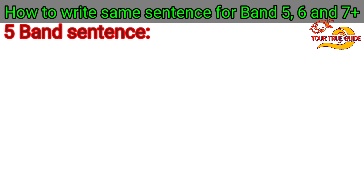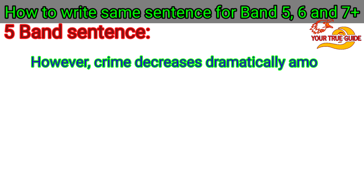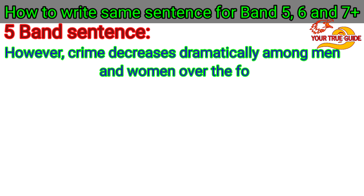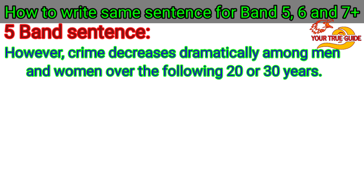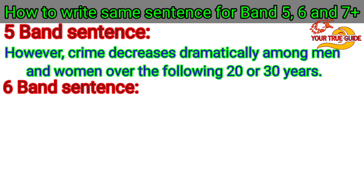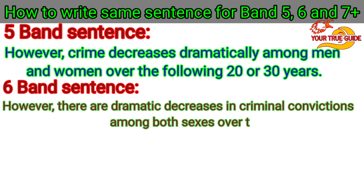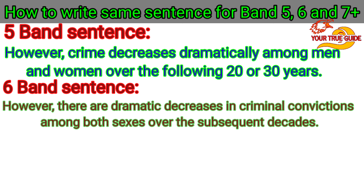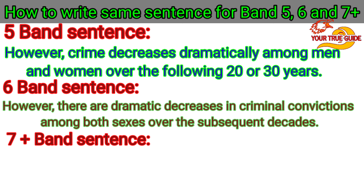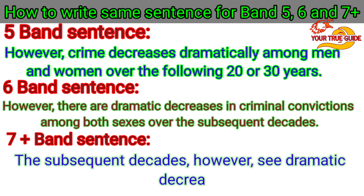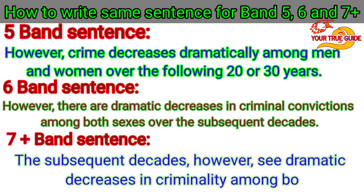Another sentence with band 5 formation is: 'However, crime decreases dramatically among men and women over the following 20 or 30 years.' Now let's make the same sentence for 6 bands: 'However, there are dramatic decreases in criminal convictions among both sexes over the subsequent decades.' Now we will change the formation for 7 plus bands. Here we will bring the time period to the start, before 'however': 'The subsequent decades, however, see dramatic decreases in criminality among both sexes.'